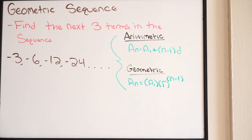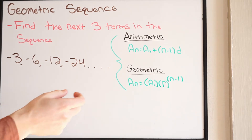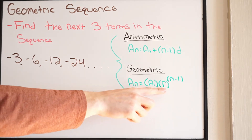The key difference between an arithmetic and a geometric sequence is that an arithmetic sequence has a common difference — we call it D — between its terms. With the geometric, it has a common ratio between its terms, and we call that R.